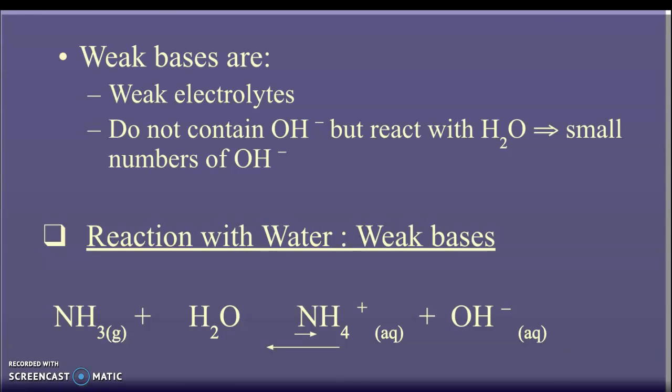Weak bases are weak electrolytes and do not contain OH- themselves, but they react with water. So they create a small number of OH- because of their reaction with water. You can see the reaction here with ammonia plus water. Some of it basically pulls the H+ ion away from water, and it becomes an ammonium ion, and then you have your hydroxide ion. So that is how weak bases work. Instead of just producing their own OH by direct ionization, they cause water to ionize.